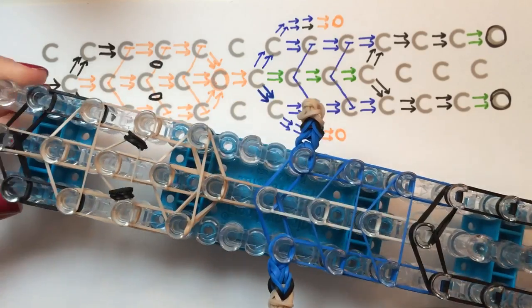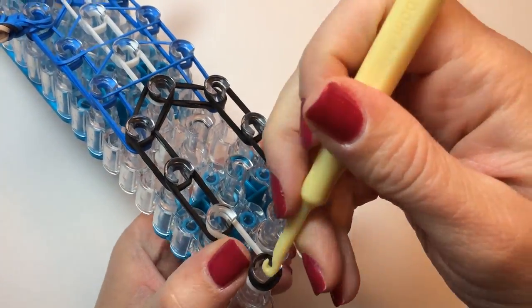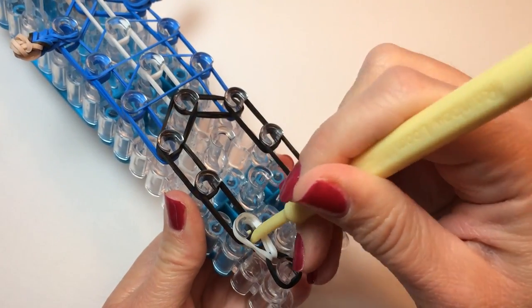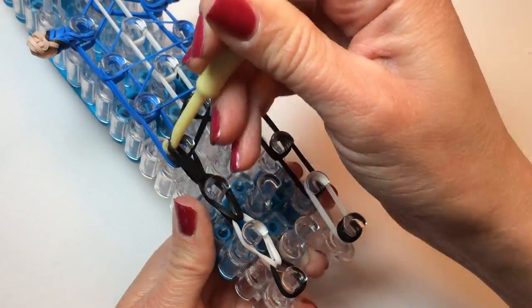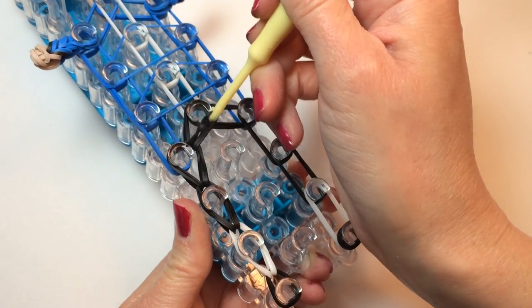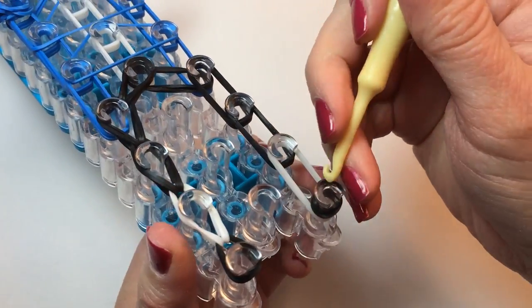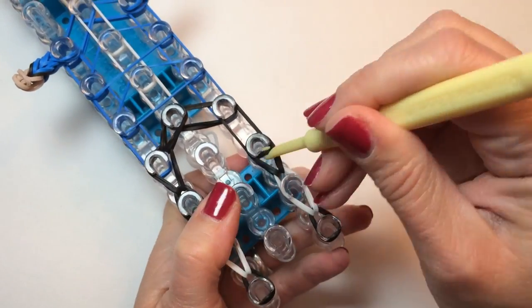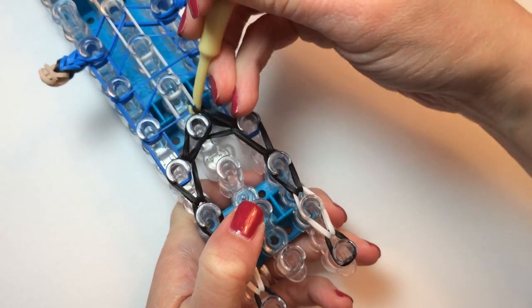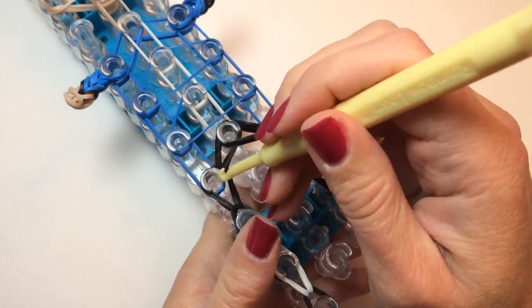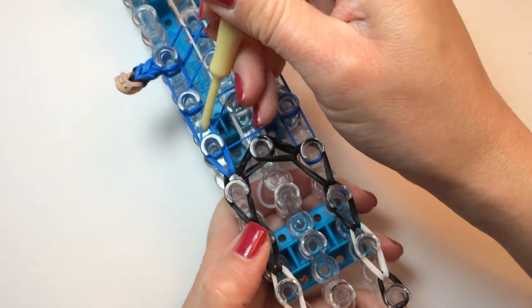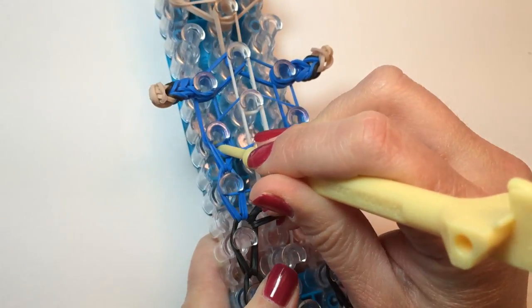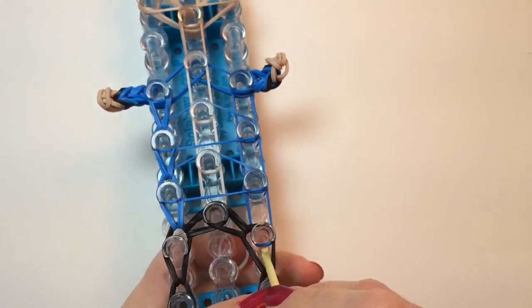All the rubber bands are in place now. Beginning at his feet, place your hook in to catch those two white bands and bring them forward. Going right up his leg, finishing off the pants, and then coming to the other side to do the same. The bottom of his jacket, going straight up to his shoulder, just like you would construct a triple single bracelet, and the other side of his jacket.